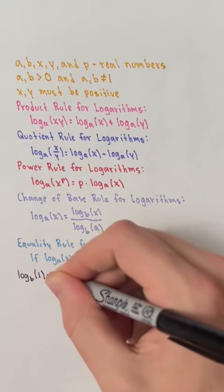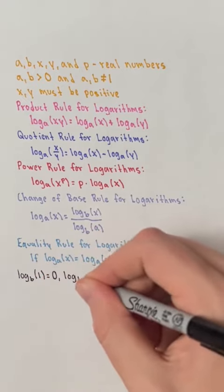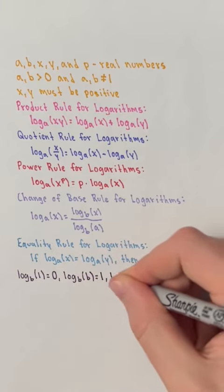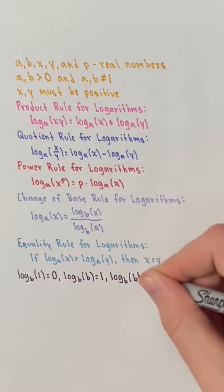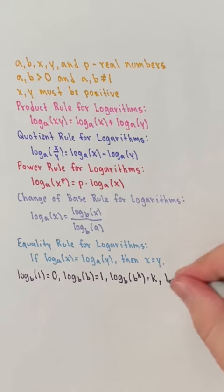For example, the log base b of 1 is equal to 0. The log base b of b is equal to 1. The log base b of b to the power of k is equal to k, and b raised to the power of log base b of k is equal to k.